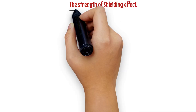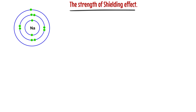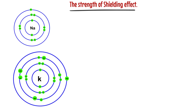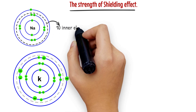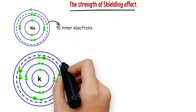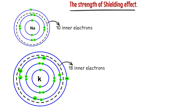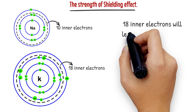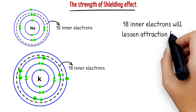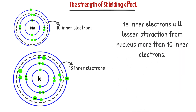The strength of shielding effect. Consider two atoms: sodium and potassium. Sodium has 10 inner electrons, but potassium has 18 inner electrons. 18 inner electrons will lessen attraction from the nucleus more than 10 inner electrons.